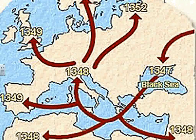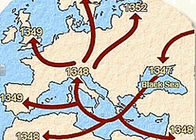Once plague arrives in Europe, it moves very swiftly. First in the Black Sea in 1347, then to North Africa and Italy in 1348, Spain by 1349, and then it moves up towards England, Scandinavia, and Russia by 1352.